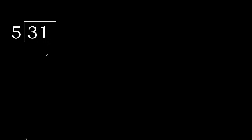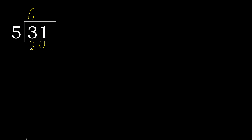31 divided by 5. 3 is less, therefore next. 31 is not less, therefore work with 31. 5 multiplied by which number is nearest to 31 but not greater? 5 multiplied by 7 is 35, which is greater. 5 multiplied by 6 is 30, which is not greater.